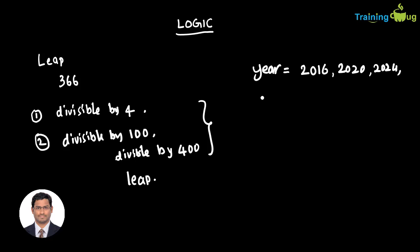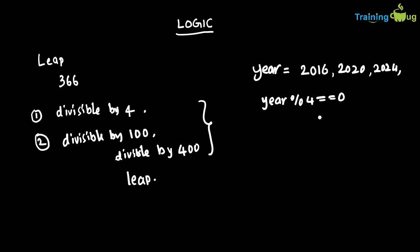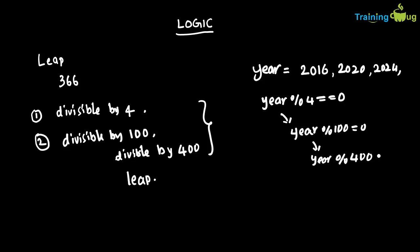First we check whether the year remainder 4 equals 0. If so, there is a possibility it is a leap year; otherwise we go to else and say it is not a leap year. If that is true, we check one more condition: if the year is evenly divisible by 100. If true, we check if the year is evenly divisible by 400. If all three conditions are satisfied, it is a leap year; if any condition fails, it is not. We'll write this code in Eclipse.